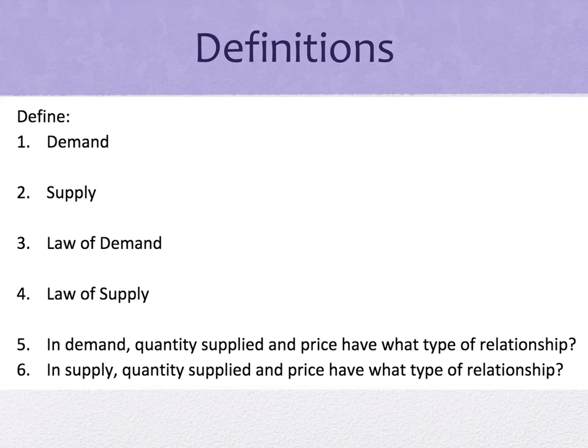Number five: in demand, quantity demanded and price have an inverse relationship — as one goes up the other goes down. As price goes up, quantity goes down; as quantity goes up, price goes down. Number six: in supply, quantity supplied and price have a direct relationship — as price goes up so does quantity, and as quantity goes down so does price.